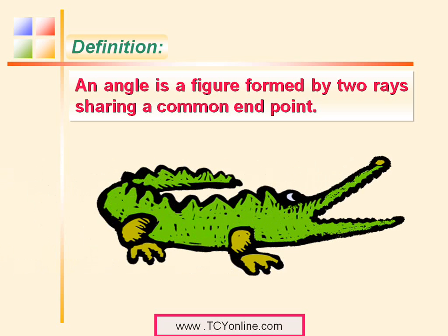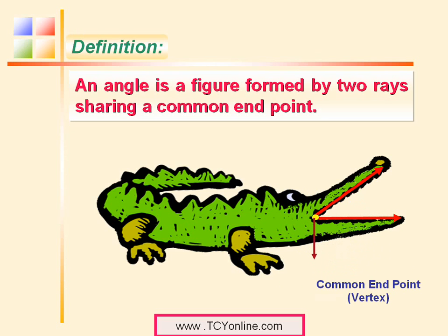Look at the mouth of the crocodile. This represents one of the rays of the angle, while this represents the second ray of the angle. These two rays are meeting at some common end point, which is called the vertex. So we can say that this is simply the angle formed.